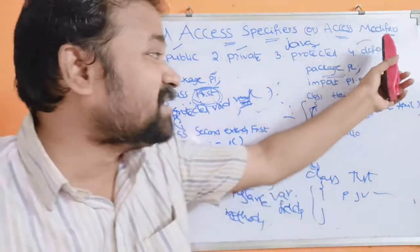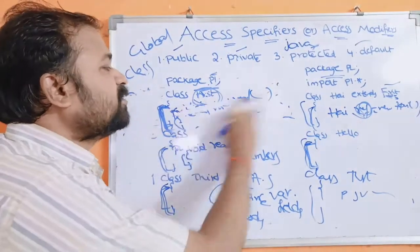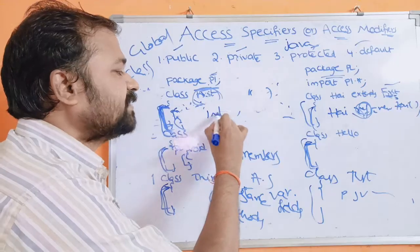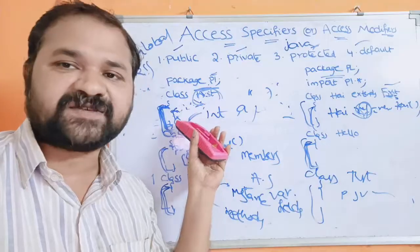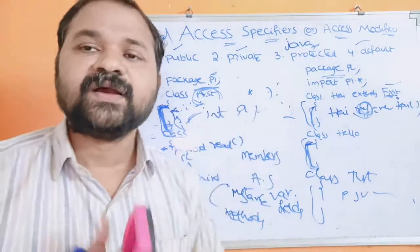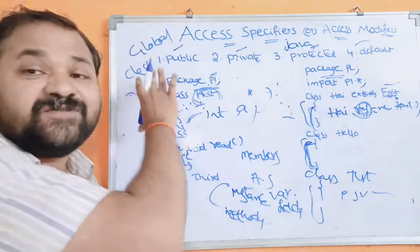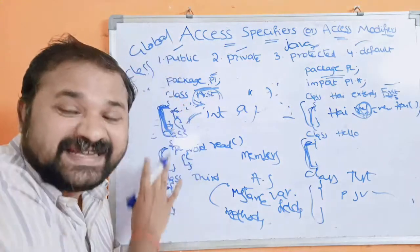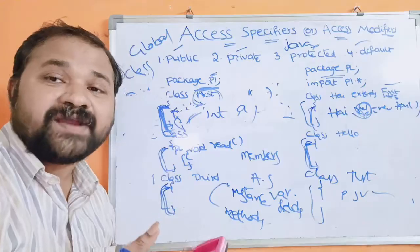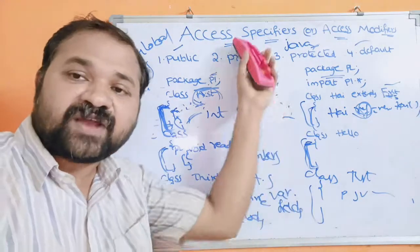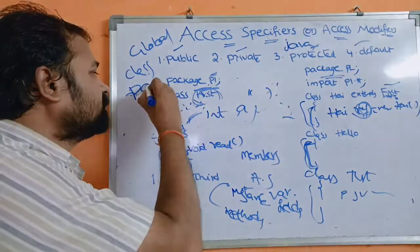Default members — if you don't specify any access specifier, for example 'int a' with no specifier — are accessible only inside this package. We can't access default members from outside this package or from outside this program. Default member scope is package scope.